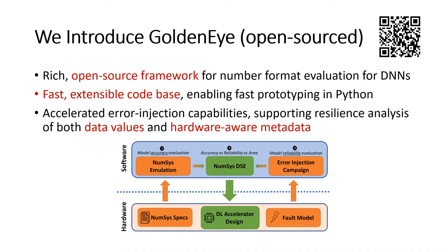In this work, we introduce an open-source framework called Goldeneye, which helps us explore and navigate the space of possible number system designs in the context of deep learning models. Our tool provides a platform for fast number system emulation in software, allowing us to capture a model's accuracy as a function of the underlying hardware representation.